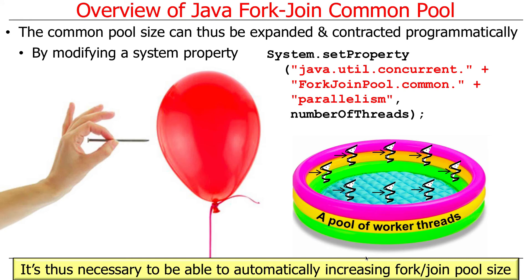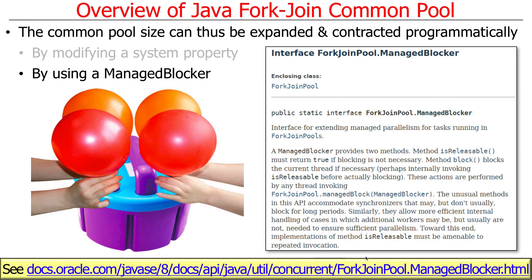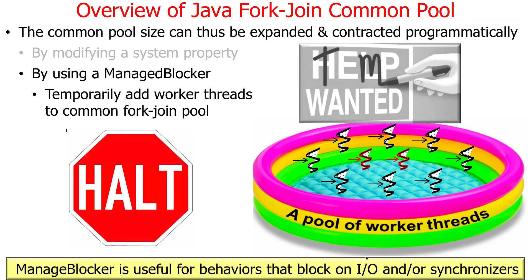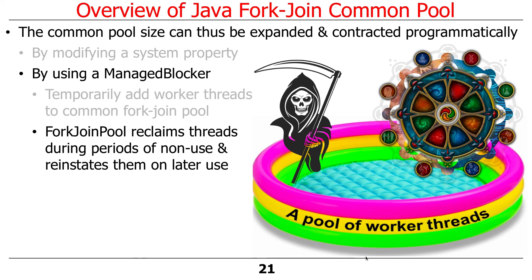You may need to automatically increase or decrease the fork join pool size. The way to do that is by using a managed blocker, which allows you to temporarily add worker threads to the common fork join pool. This is useful for any kind of program that needs to block on I/O or other synchronizers — like reading or writing a big file, waiting for a lock, or passing messages via a blocking queue. The managed blocker temporarily increases the number of threads in your pool, and they'll be shut down or made available for reinstatement when no longer needed.